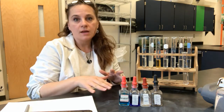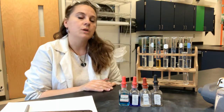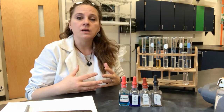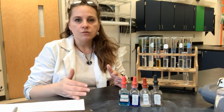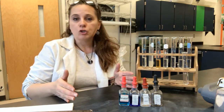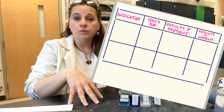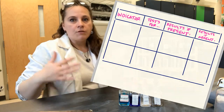In this podcast we are going to take a look at some of the various solutions that you can use as indicators for different biological molecules. This is going to show you not only what a positive test looks like but also what a negative test looks like, so that you can make the best assessment when you're actually testing for these various substances.